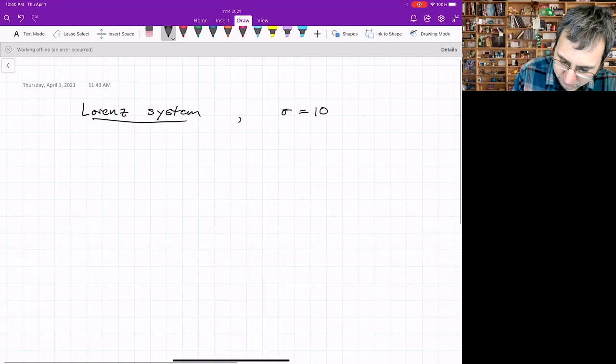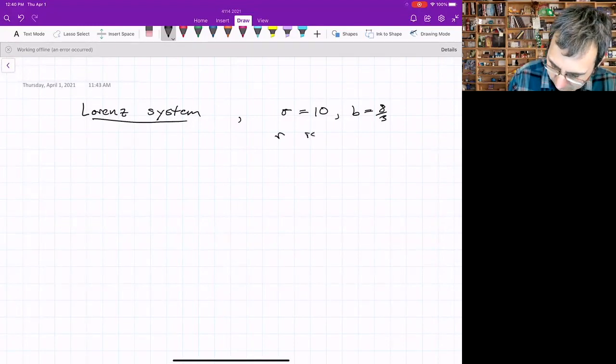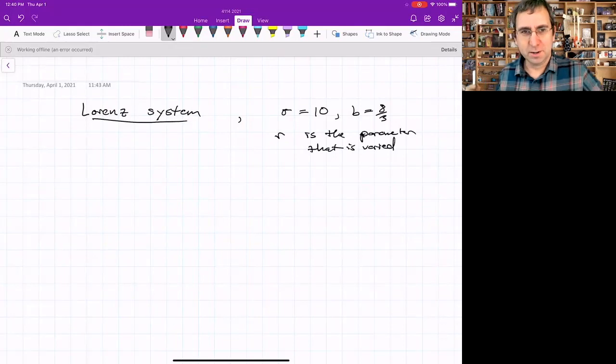The Lorenz system, remember that it had parameters sigma and b, which we basically fix at 10 and 8 thirds. And then r is the parameter that is varied. We found that for r less than 1, trajectories just sort of go into the origin.